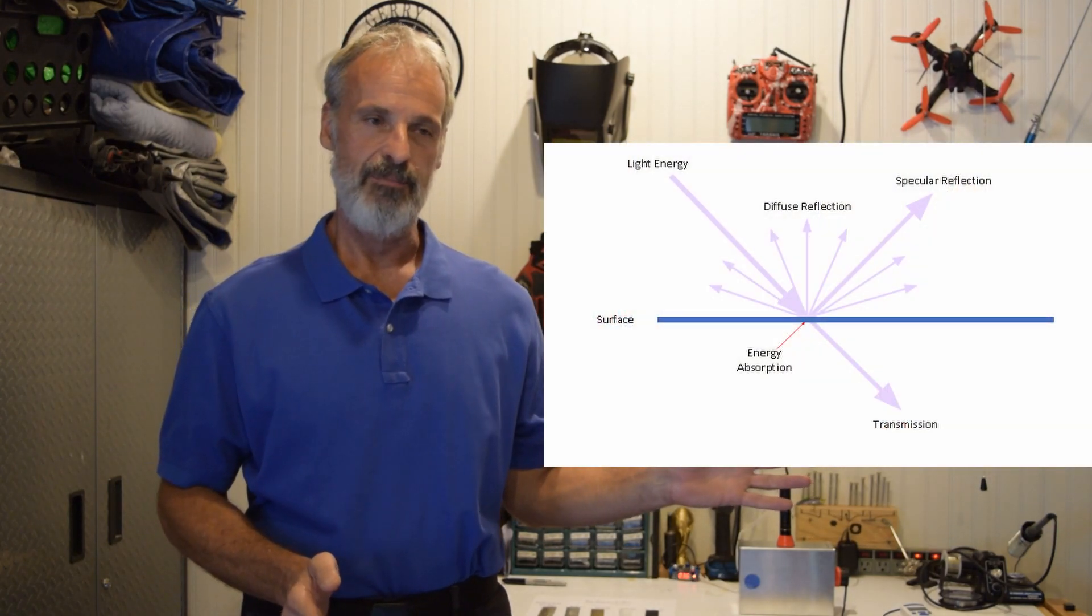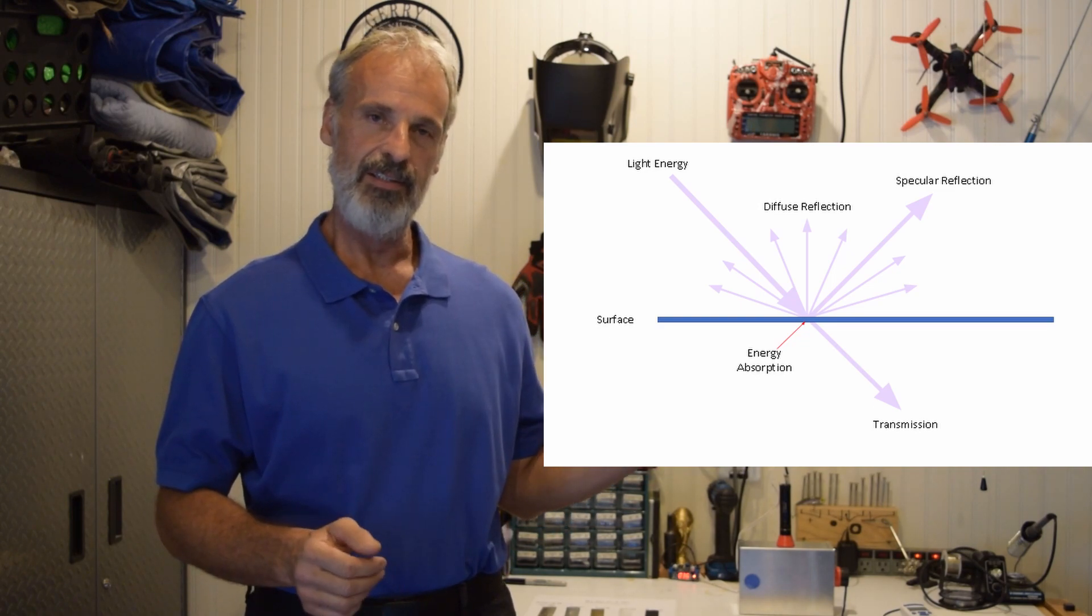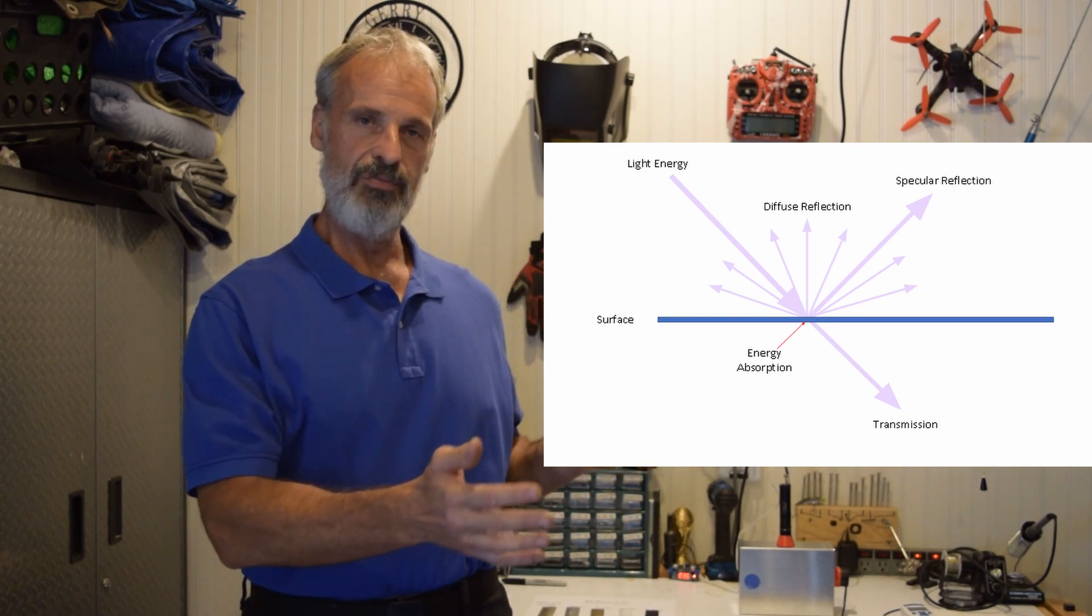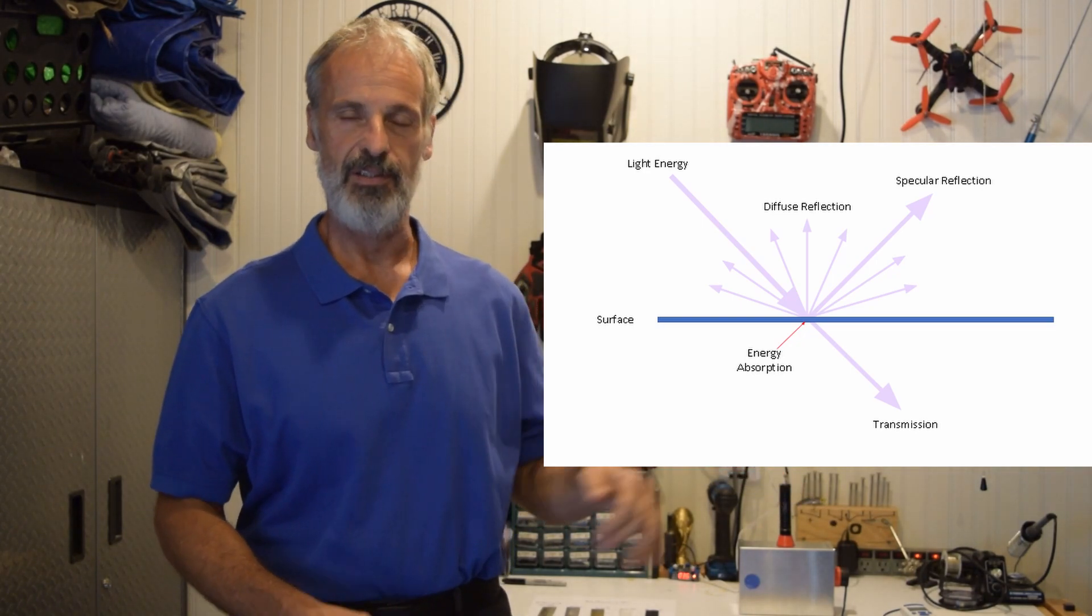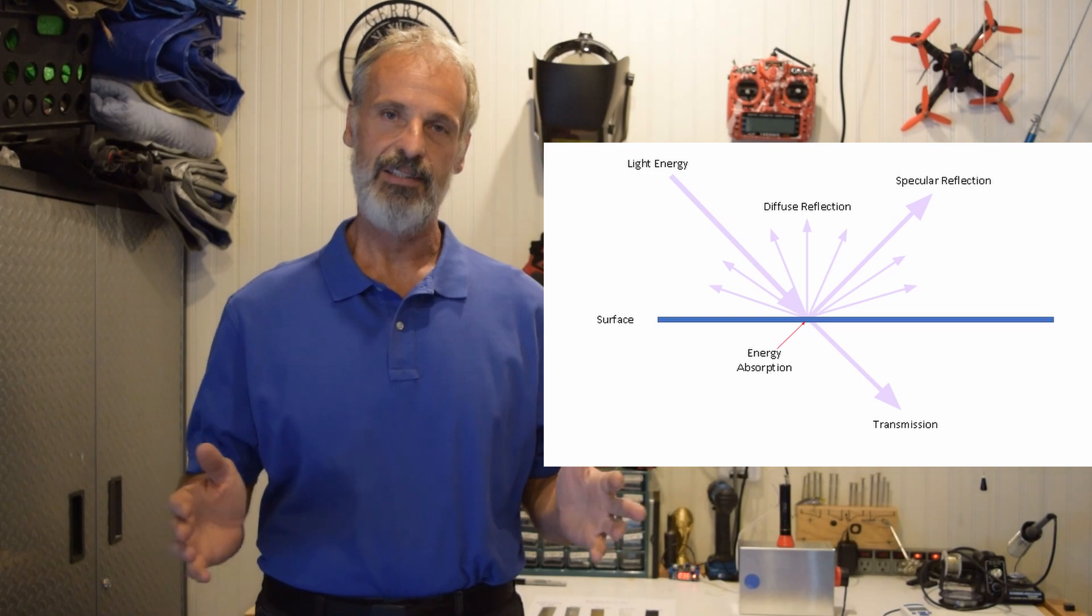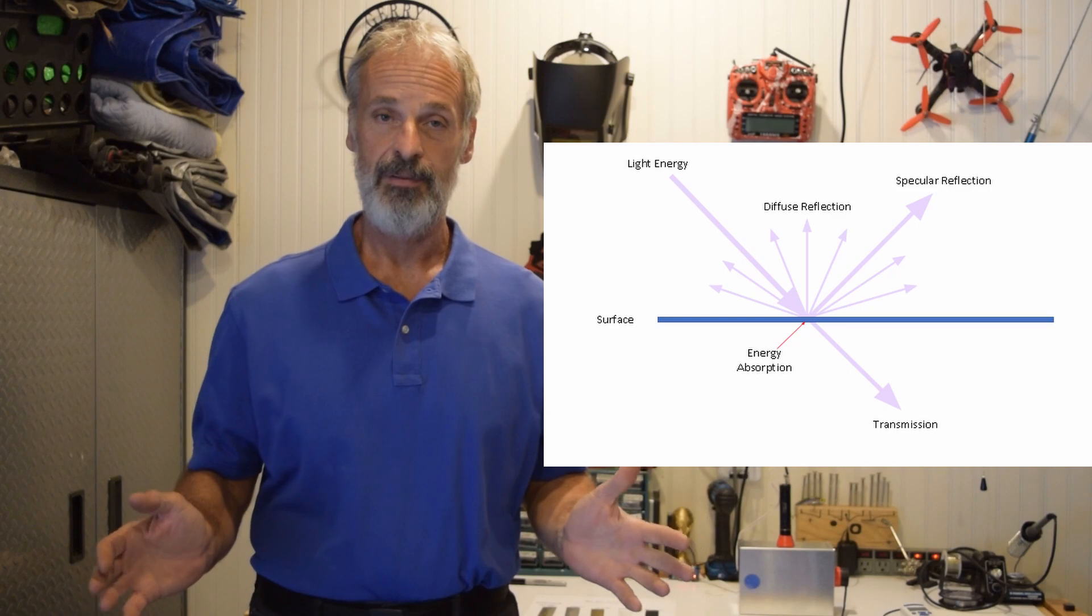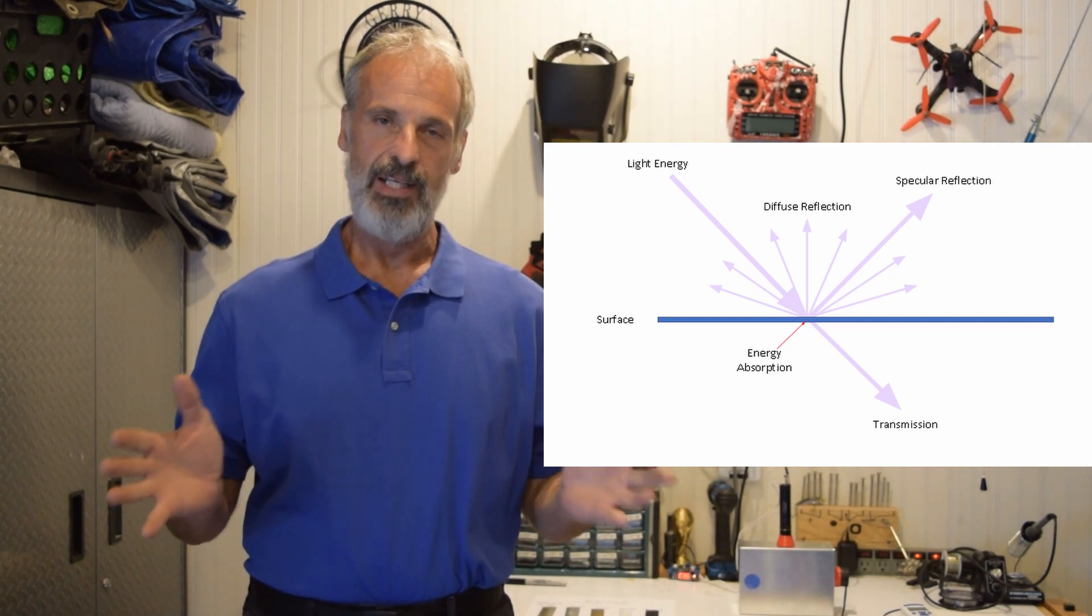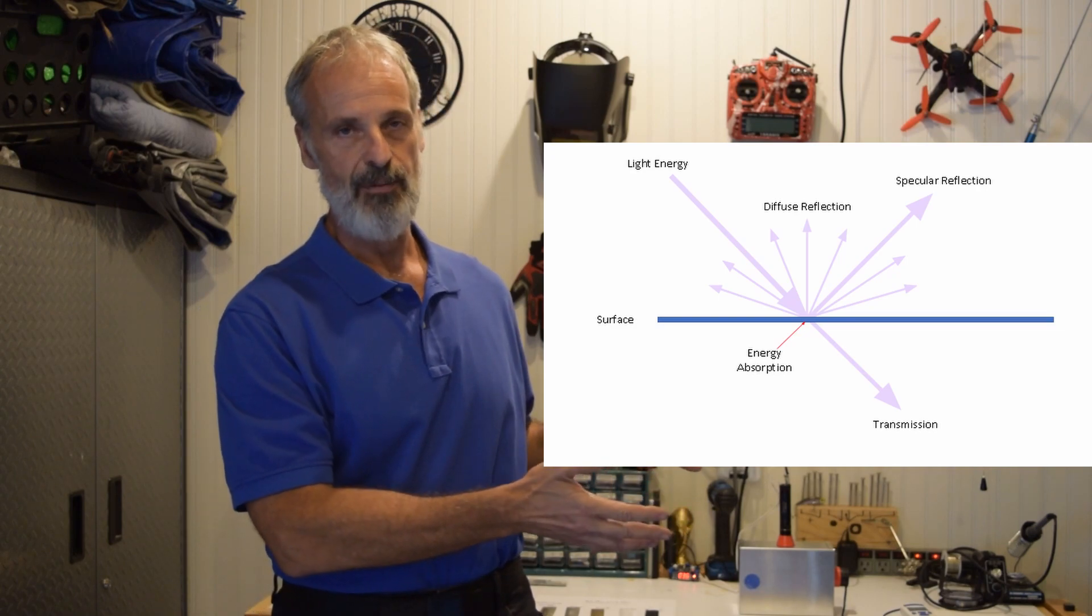Today we're going to talk a little bit about what happens when light energy strikes a surface. As you can see from the diagram, when light hits the surface, it can either be reflected, either specular or diffuse, which means it goes in different directions. It can be transmitted through the material like window glass, or it can be absorbed. What happens when light is absorbed is that energy is usually transmitted into heat into the object itself.